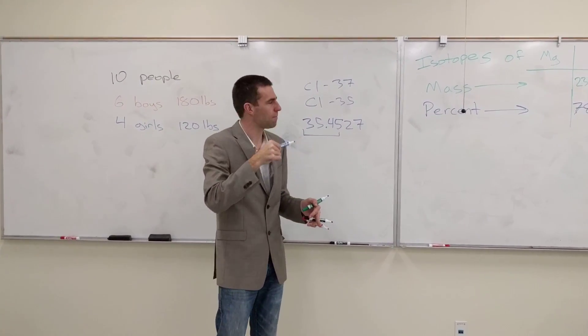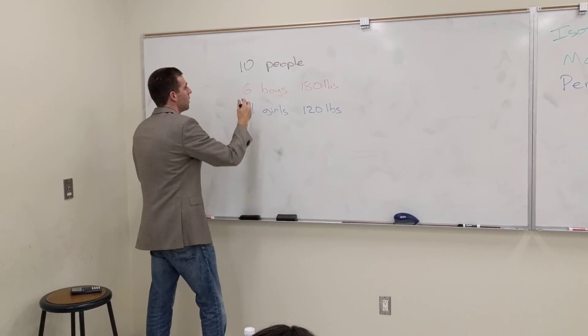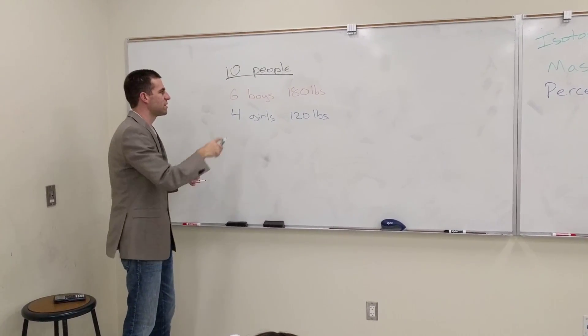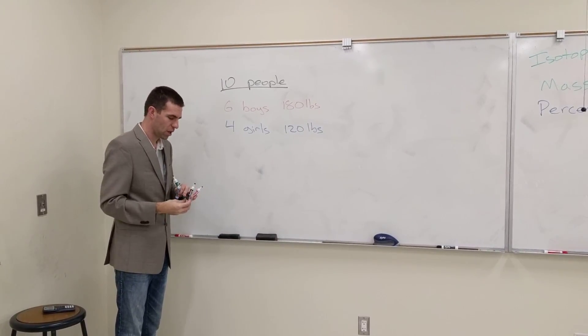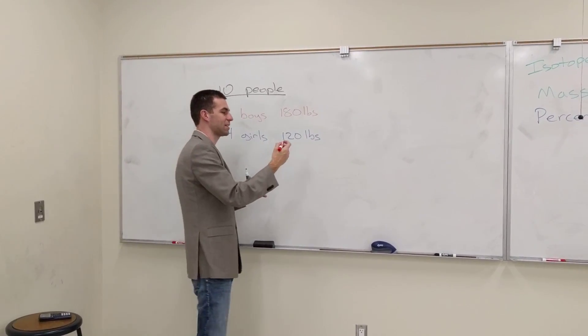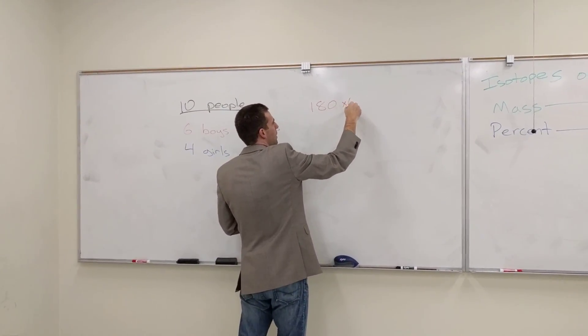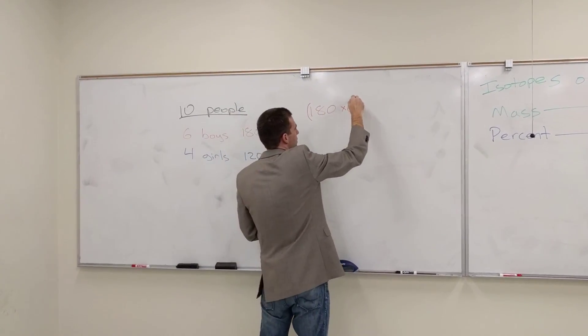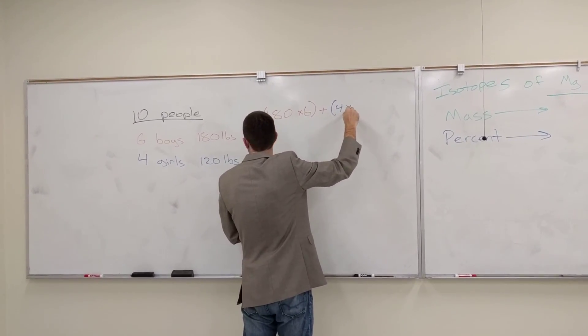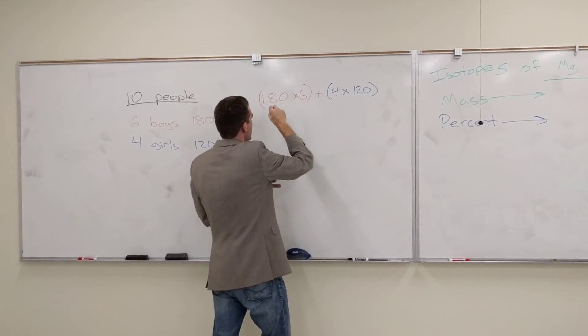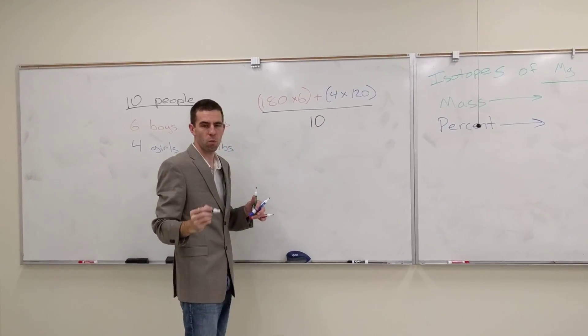So let's try and look at it in a simpler example. Let's say that we had 10 people. And of our 10 people, we had six boys that weighed 180 pounds each and four girls that weighed 120 pounds each. You'd want to say 180 pounds times six boys to get the total weight of boys, then add that to four girls times 120 pounds, and divide by the number of people. That would work for that average.